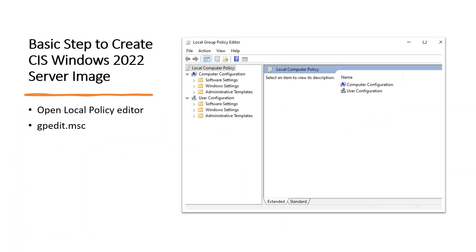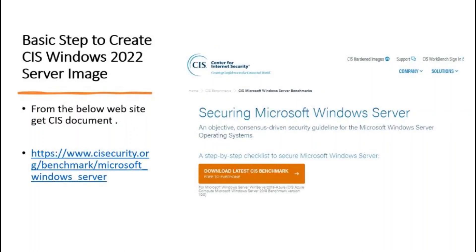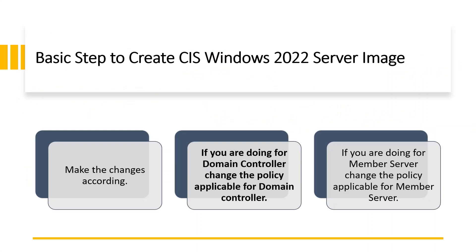Open the local policy editor using the command line by typing the below command and run gpedit.msc. From the below website, get the CIS document for Windows Server 2022. Make the changes according to the document.